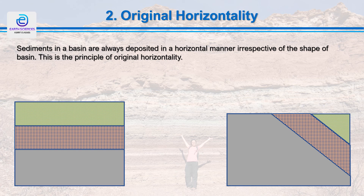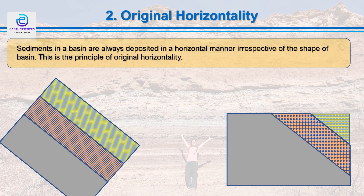Sedimentary rocks occur in all orientations — horizontal, tilted at various angles, or even folded — but they could not have been deposited in a tilted or folded condition. Sediments in a basin are always deposited in a horizontal manner, irrespective of the shape of the basin. The tilting and folding are structural changes that take place after the rocks are deposited and consolidated. When studying rocks, you must visualize them as originally deposited horizontally; this is known as the principle of original horizontality.